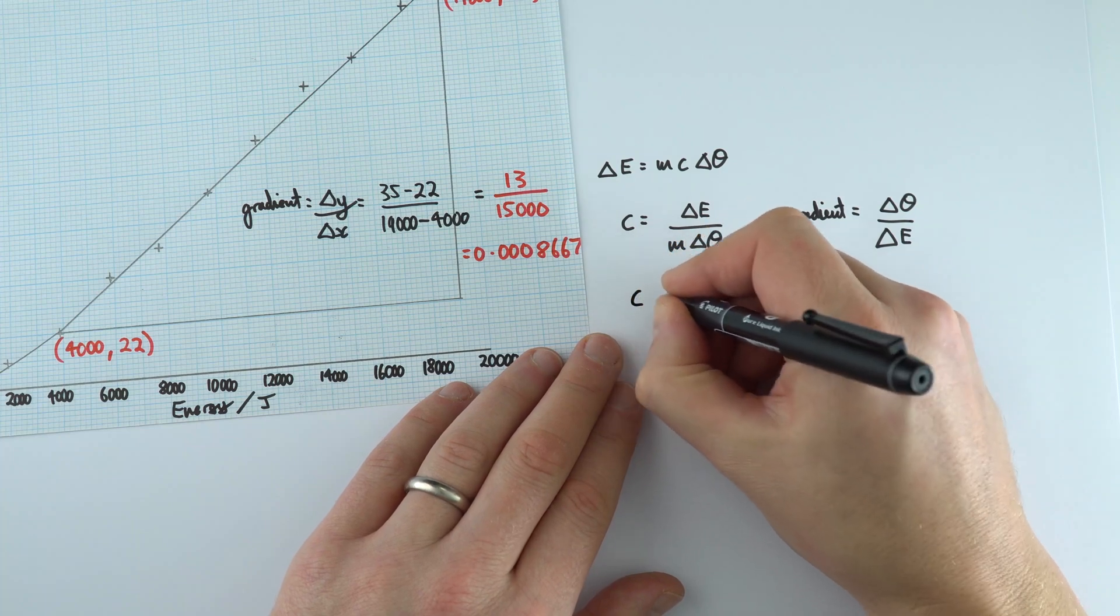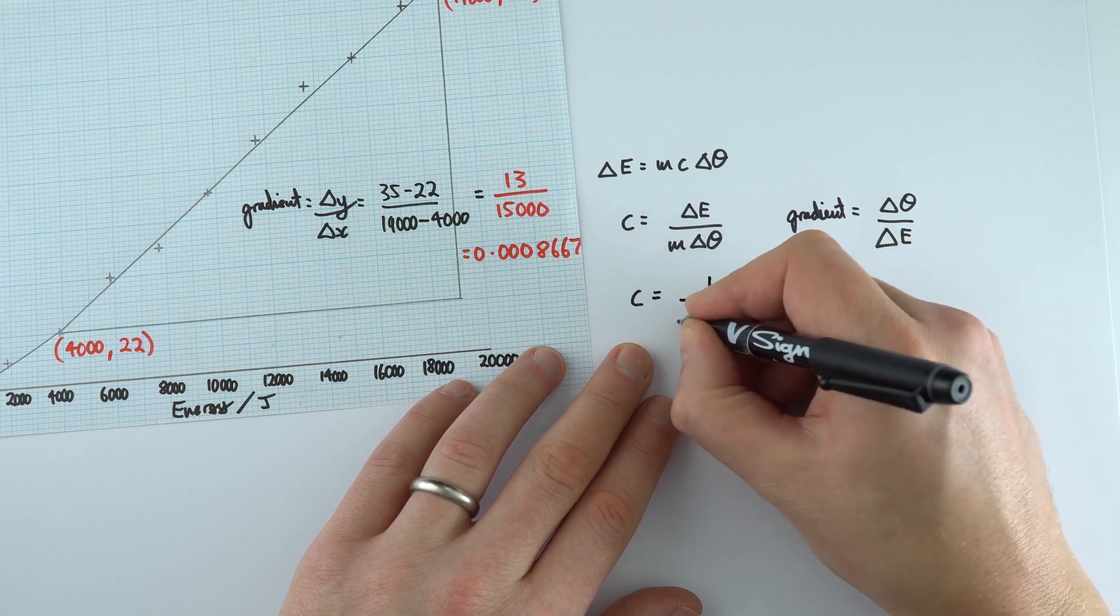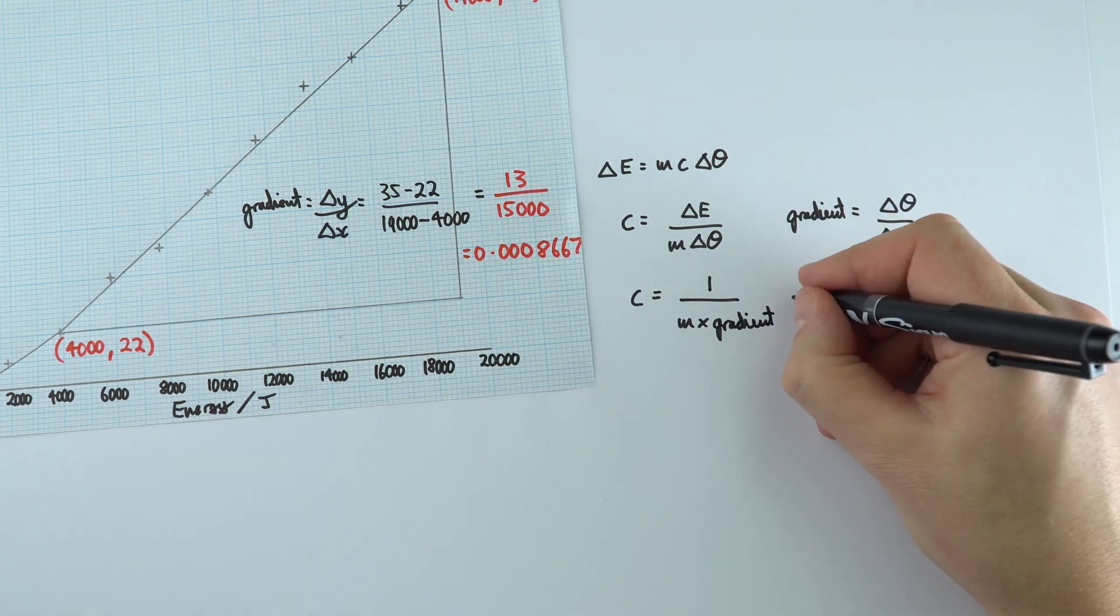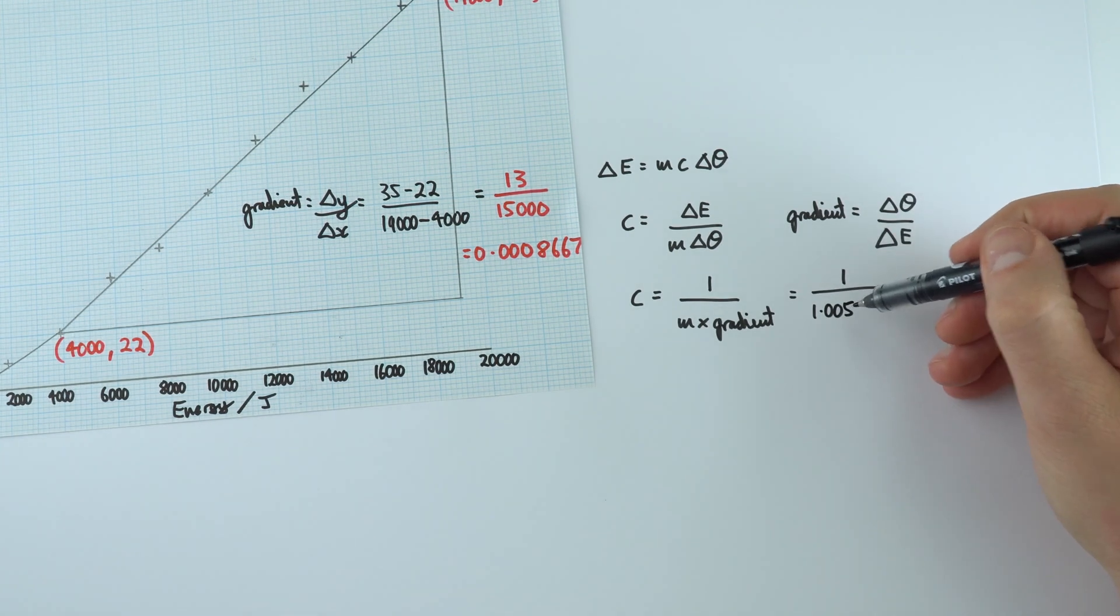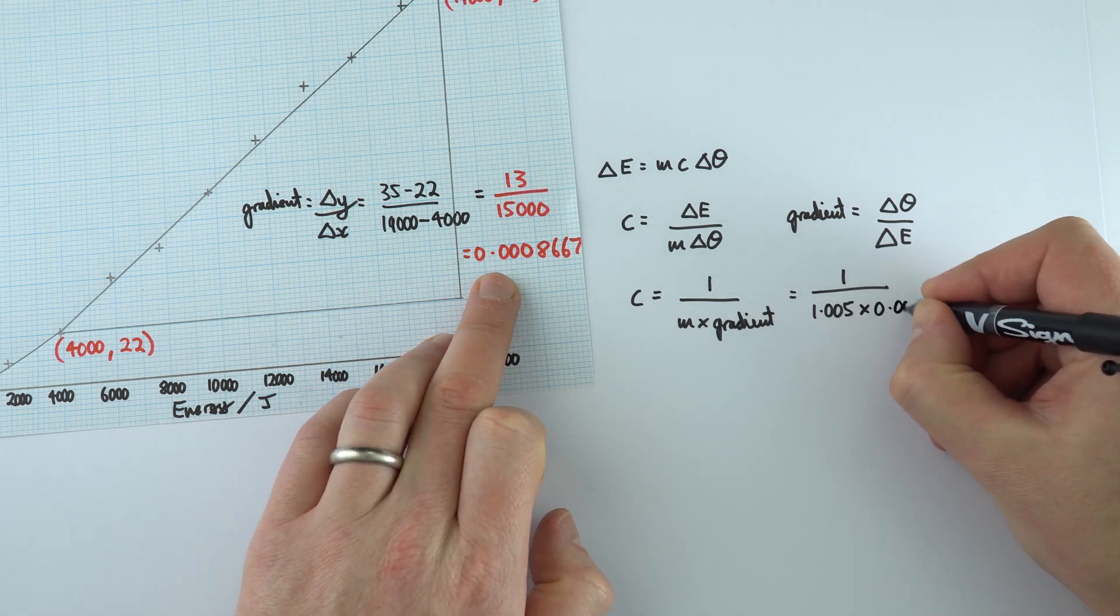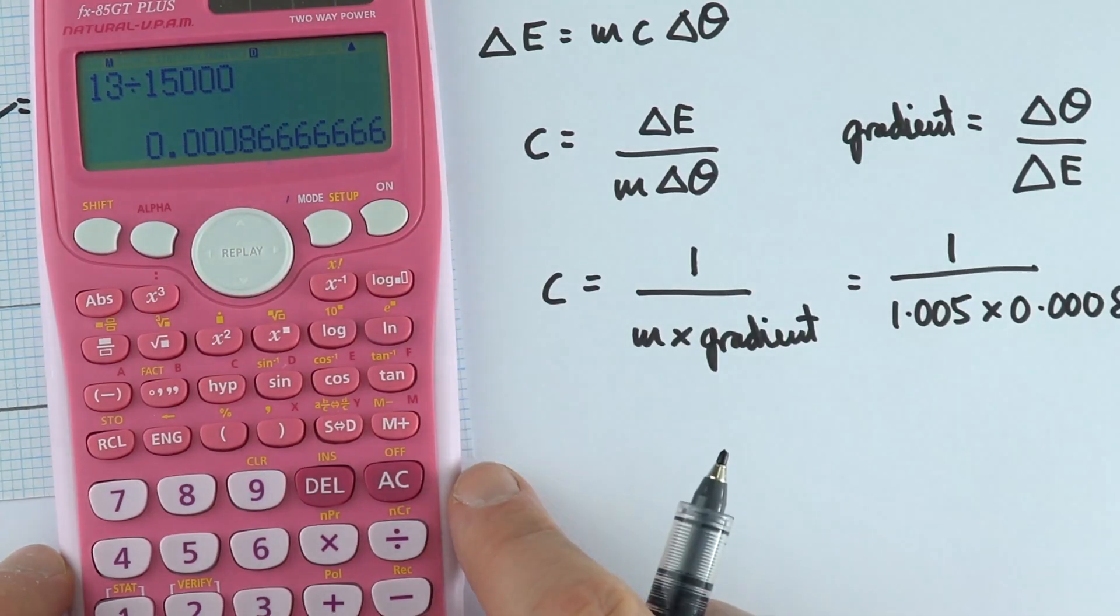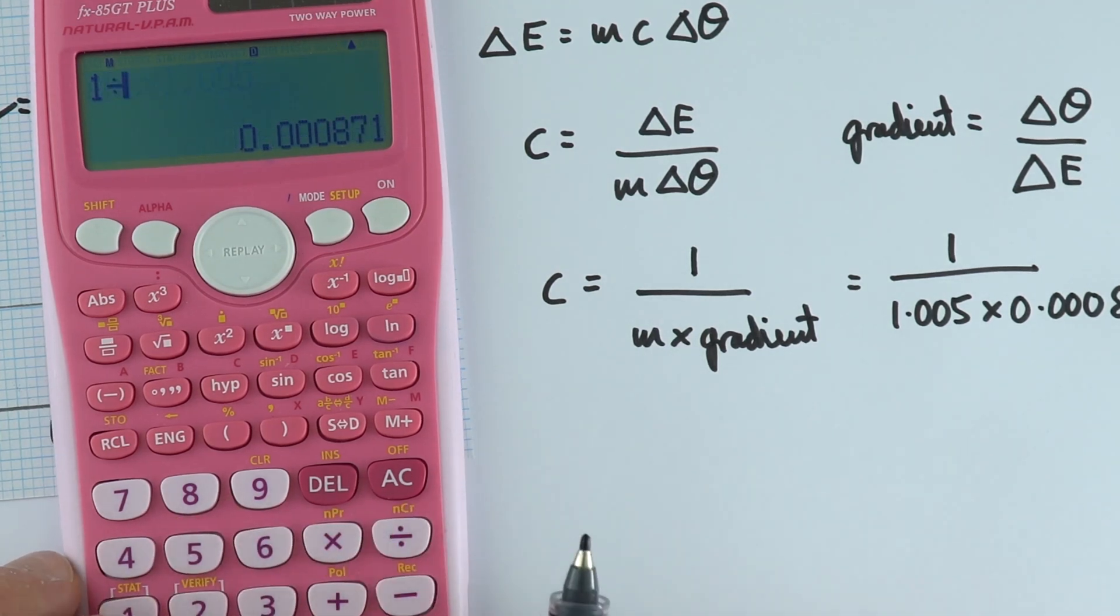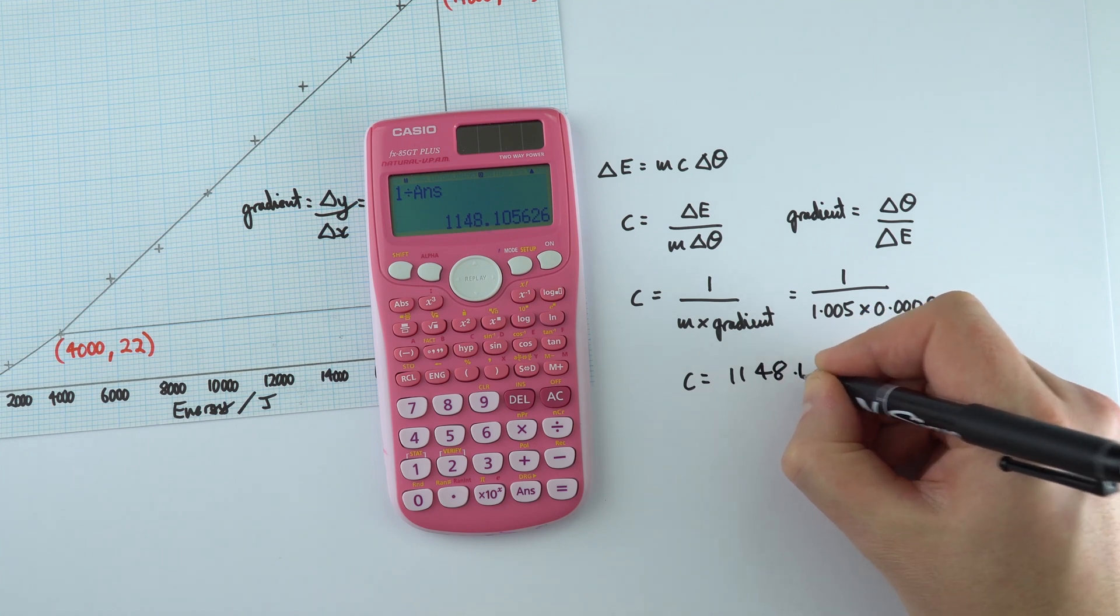And if we actually do some rearranging, we can then say that this specific heat capacity is equal to 1 divided by mass times the gradient of that line. Now if we put some numbers in, this is equal to 1 divided by mass, which was 1.005 kilograms that we took when we actually put it on the mass balance. The gradient is this value here, 0.0008667. And so I've got my value still saved in the calculator. I'm going to multiply it by 1.005, and then I'm going to do 1 divided by this answer. And this gives me a value on the calculator of 1148.1.